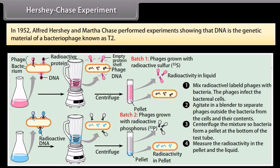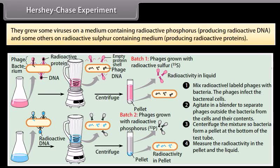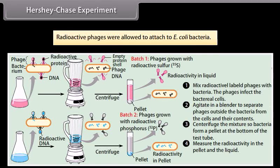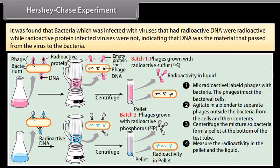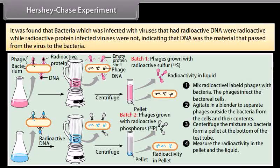In 1952, Alfred Hershey and Martha Chase performed experiments showing that DNA is the genetic material of a bacteriophage known as T2. They grew some viruses on a medium containing radioactive phosphorus, producing radioactive DNA, and some others on a radioactive sulfur-containing medium, producing radioactive proteins. Radioactive phages were allowed to attach to E. coli bacteria. It was found that bacteria infected with viruses that had radioactive DNA were radioactive, while those infected with radioactive protein viruses were not, indicating that DNA was the material that passed from the virus to the bacteria.